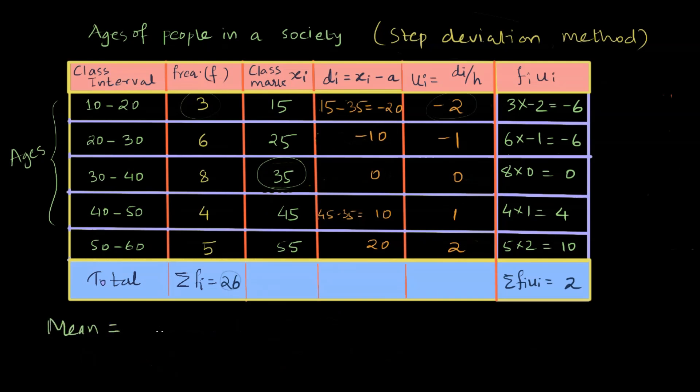Now I can find mean using step deviation formula. So mean will be a plus h times summation fiui divided by summation fi. This is the formula of finding mean by step deviation method. Now I can just put the corresponding values. In place of a, I can write 35, which was my assumed mean. In place of h, I can write 10 because 10 is the class size.